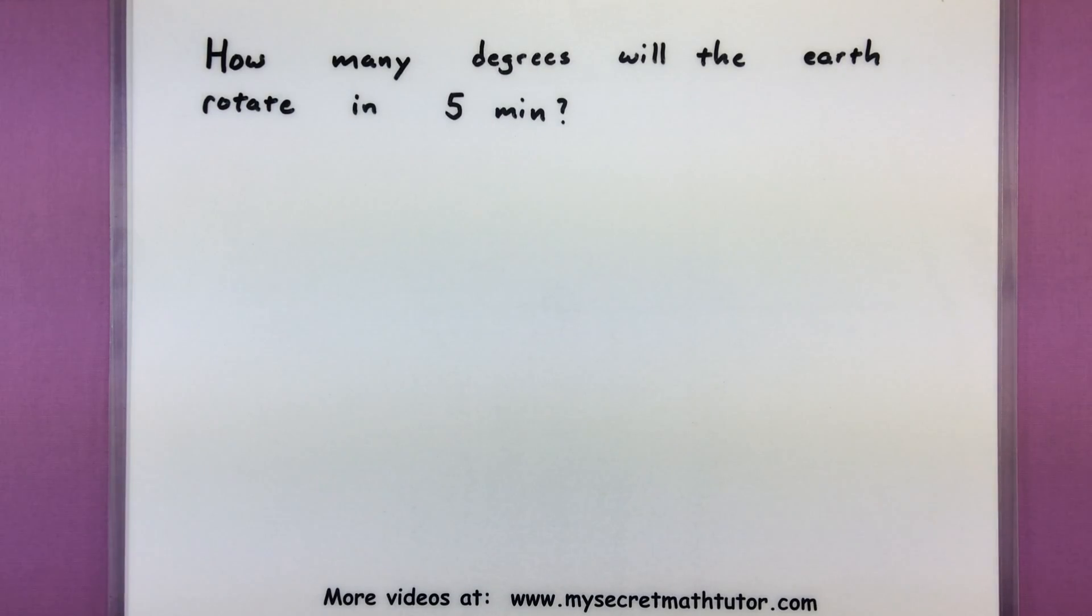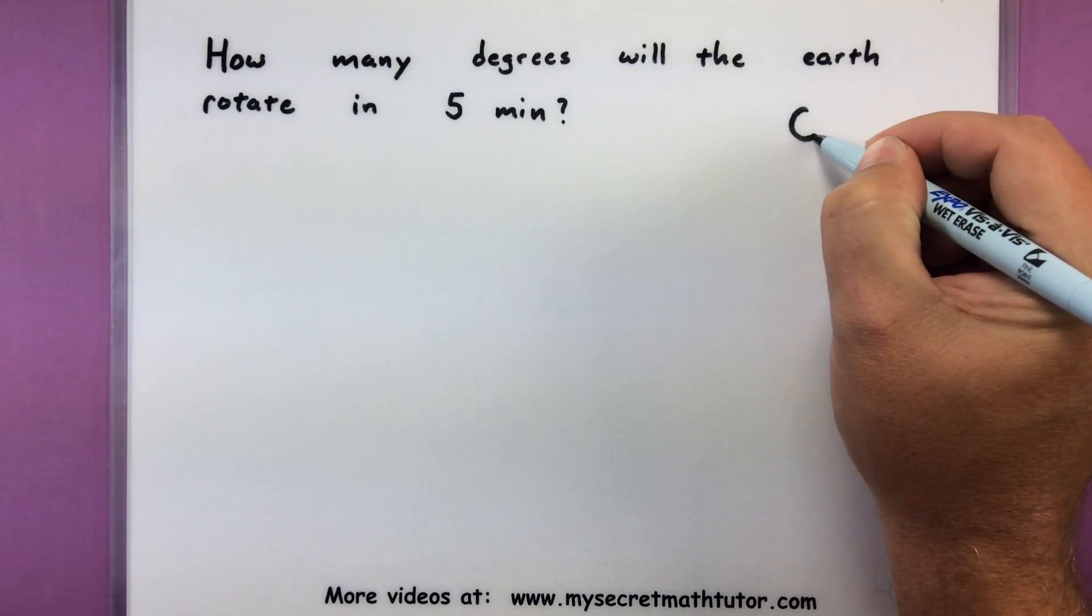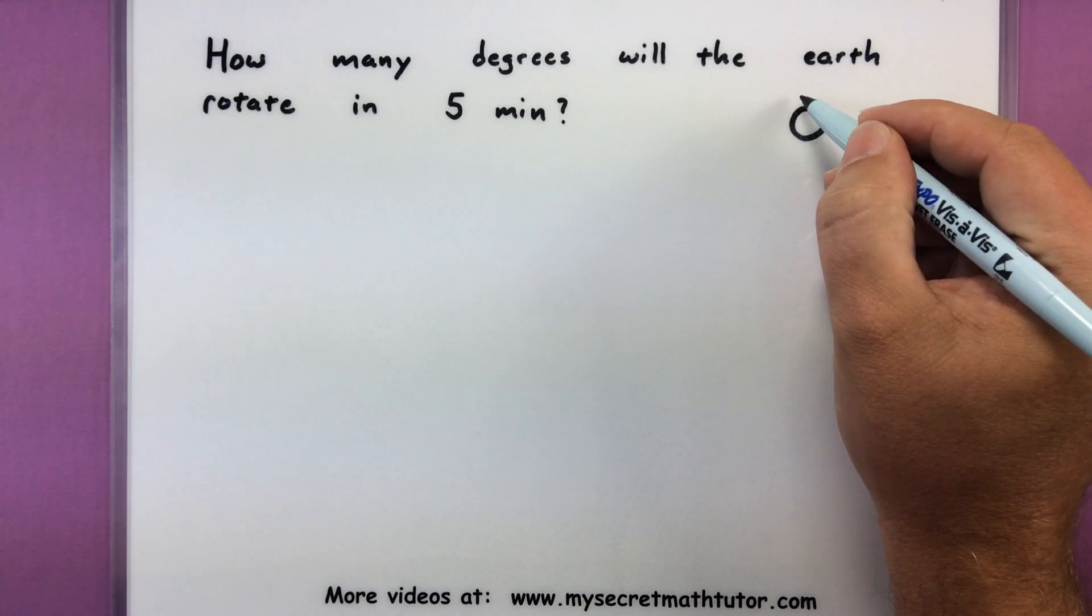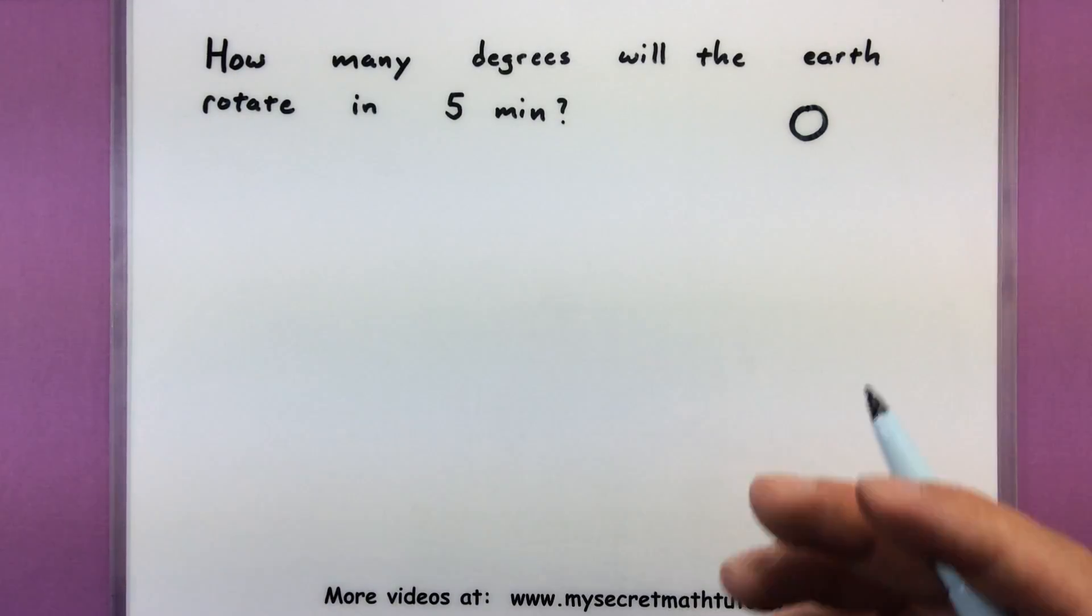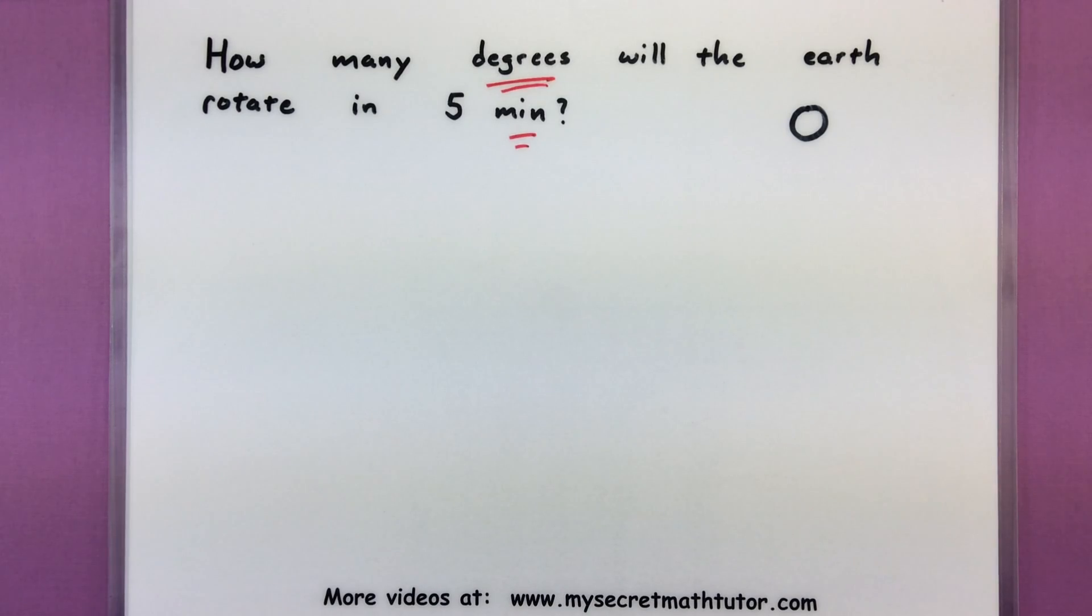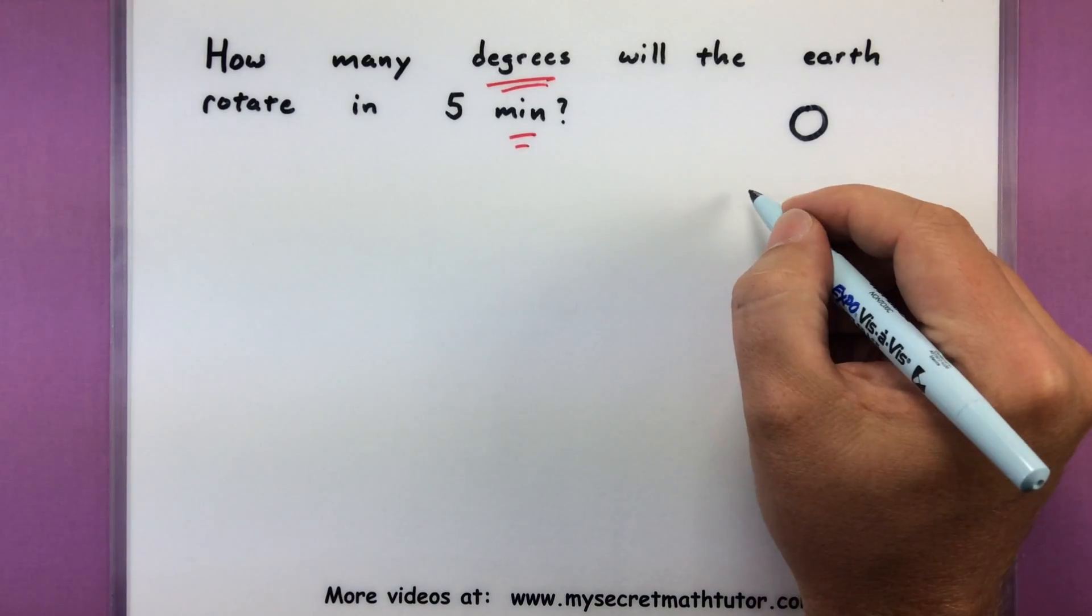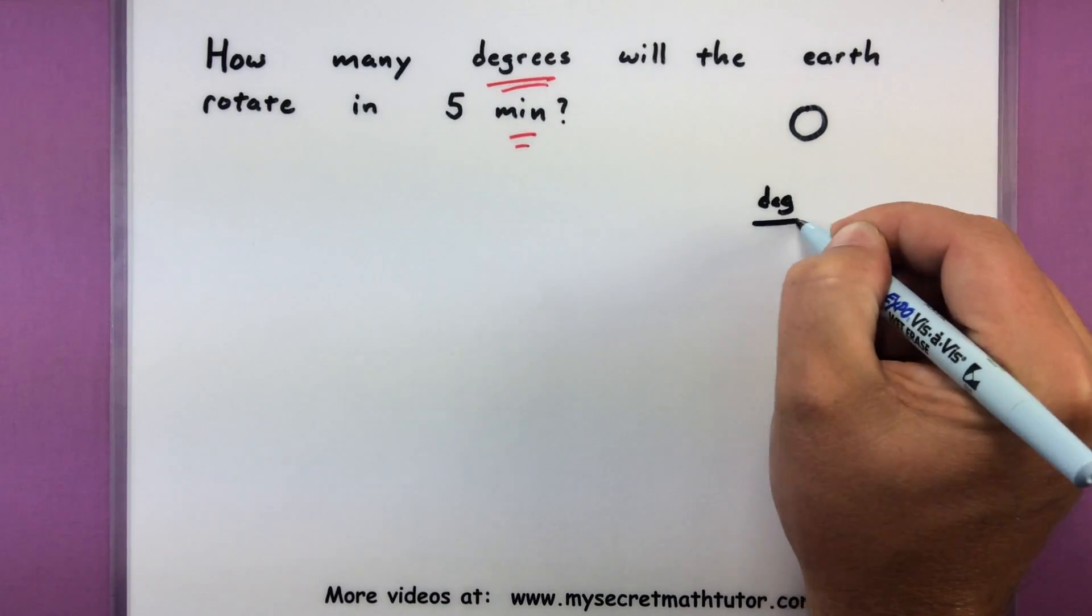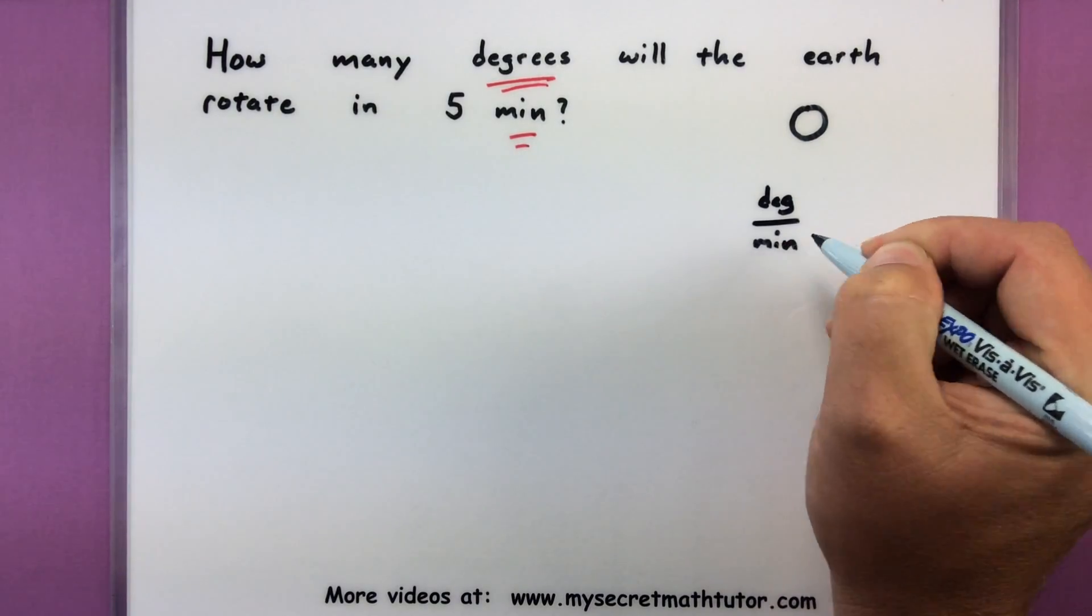So this one has the same feel to it. It says, how many degrees will the earth rotate in five minutes? So much like our wheel example, you can imagine the earth and it is rotating. And I want to figure out, well, how far is it actually going to rotate over the course of five minutes? Like before, I really want to comb this thing over and say, well, what am I after? Well, it looks like we're looking for degrees in minutes. So let's go ahead and put that over here on the right side. I need degrees per minute.